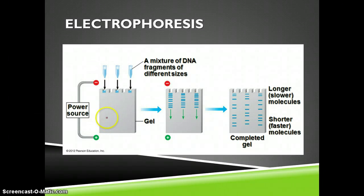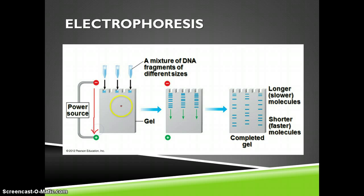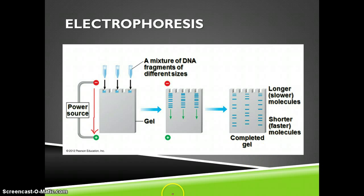In an electrophoresis setup, samples are placed in wells. The negative pole and positive pole are on opposite ends — electricity flows from negative to positive. As electrons push through the gel, they move the negatively charged DNA fragments, repelling them away from the negative pole. Shorter fragments move farther toward the positive end than longer ones, producing a banding pattern of different fragment lengths.